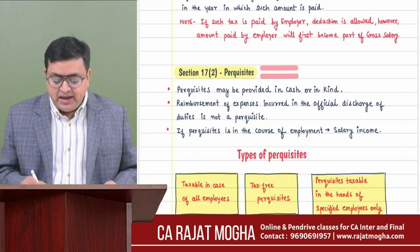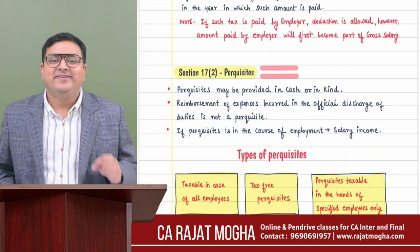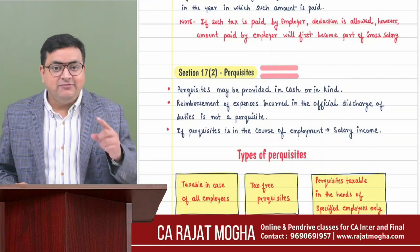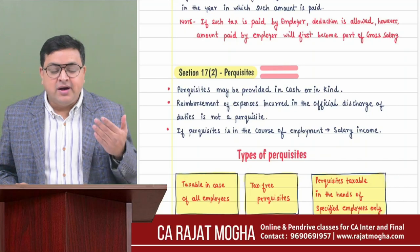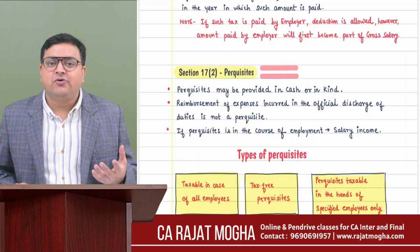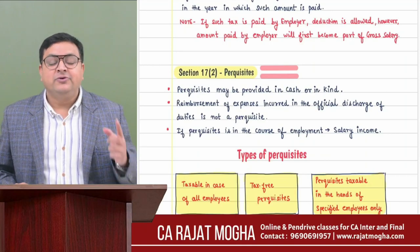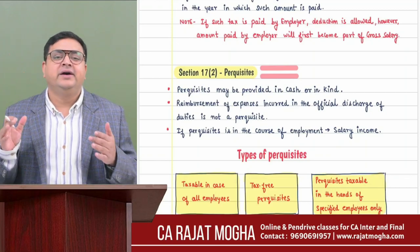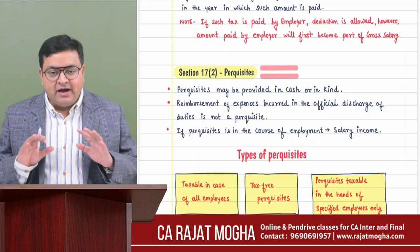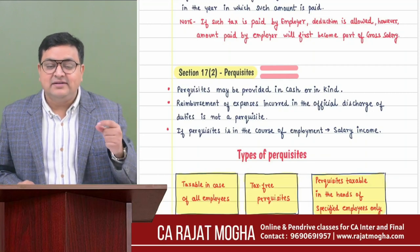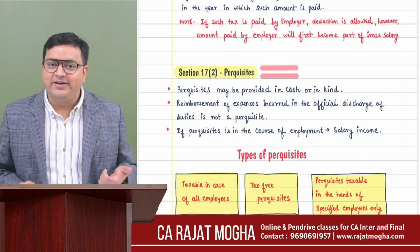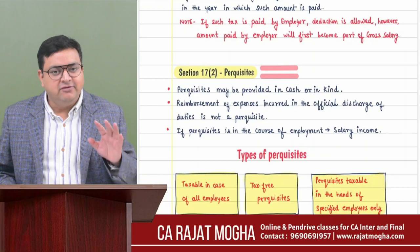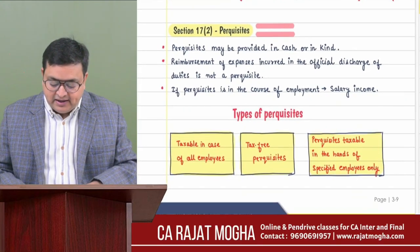Perquisites provided in the course of employment are taxed under the head salary. In PGBP, when running a business or profession, you might receive perquisites from clients, customers, or suppliers - those are taxable under PGBP, not salary. So perquisites should come from the employer to be taxed under salary; if from customers or clients in the course of business, it goes under PGBP.